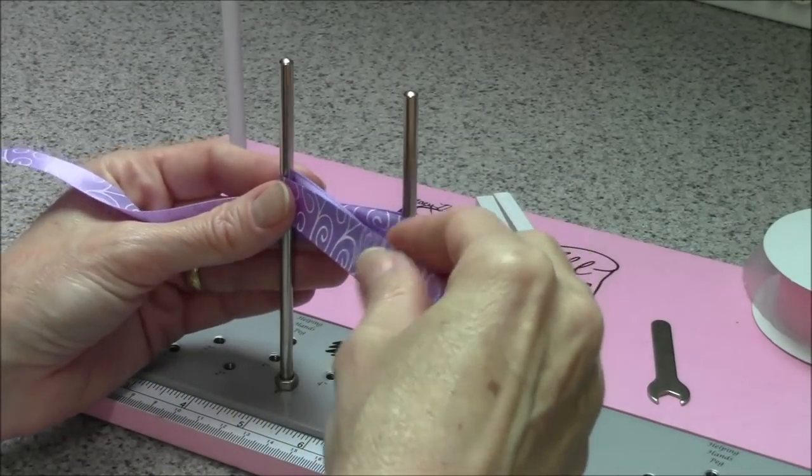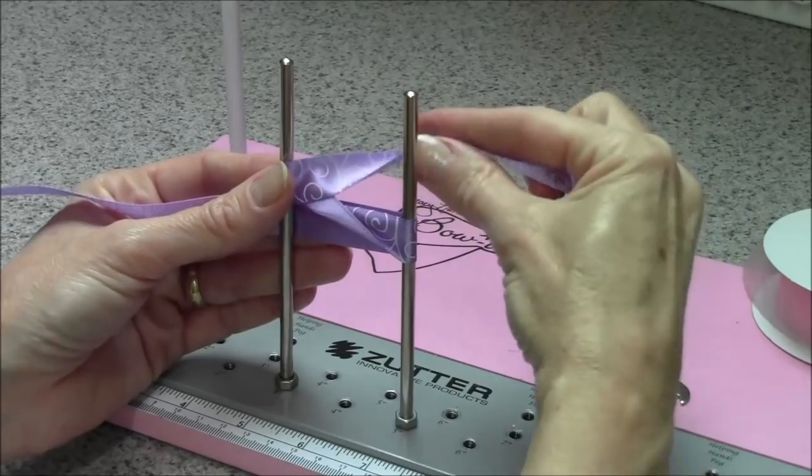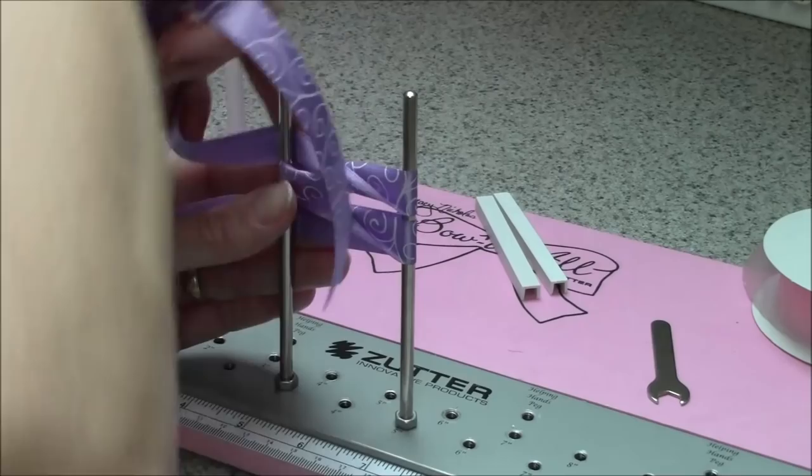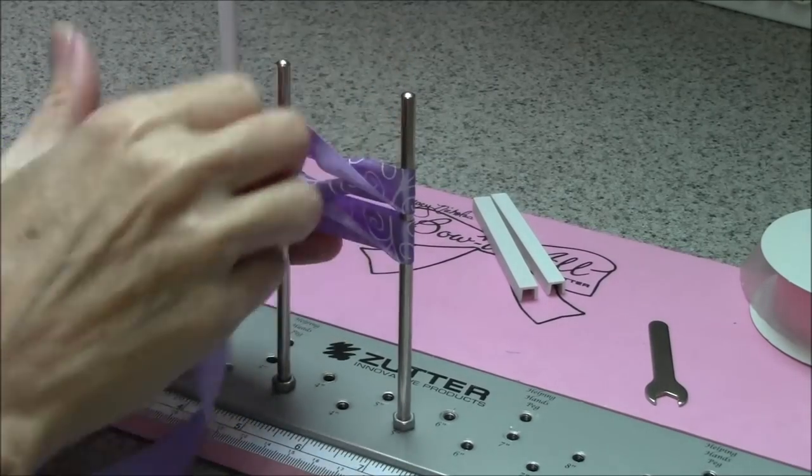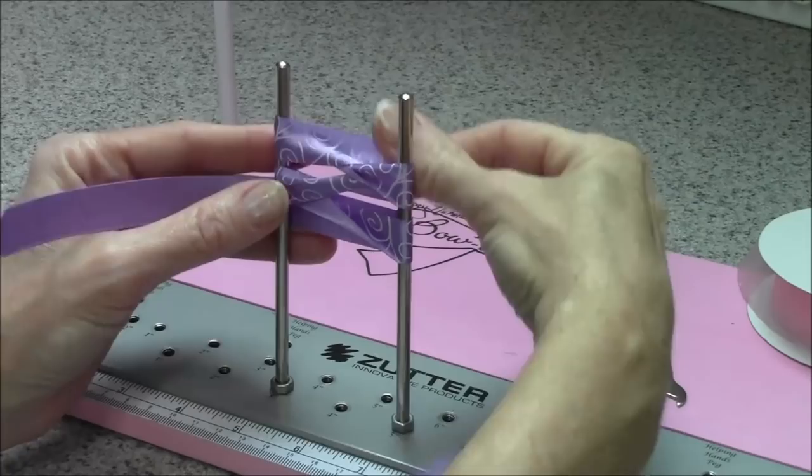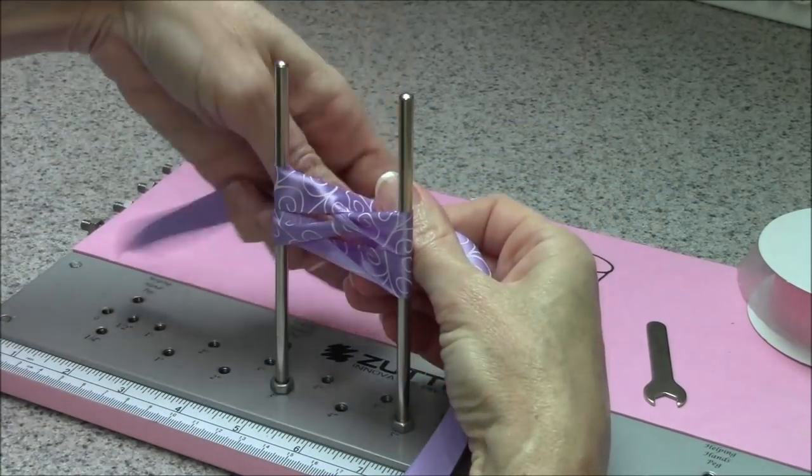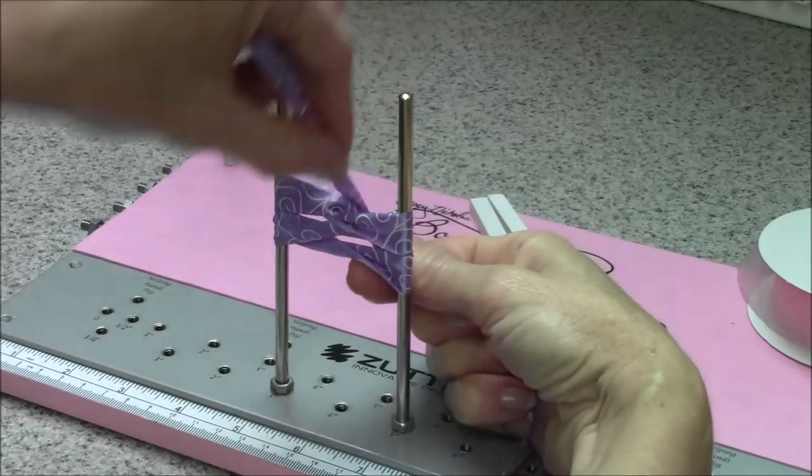Go through the middle, a little half twist through the middle, and another half twist. So now we have two loops on each side, two loops on each side.